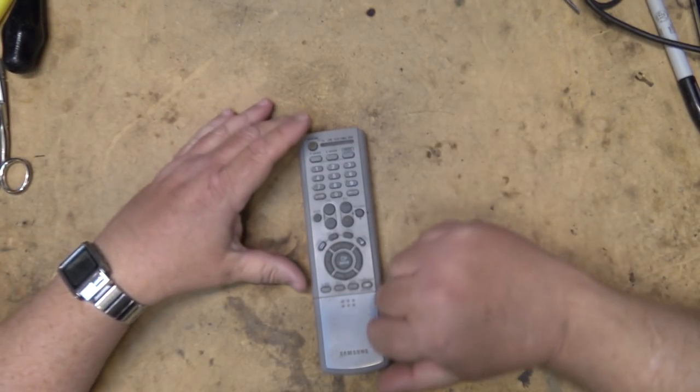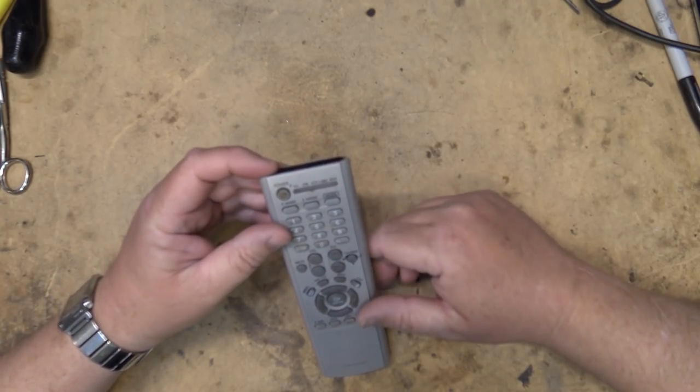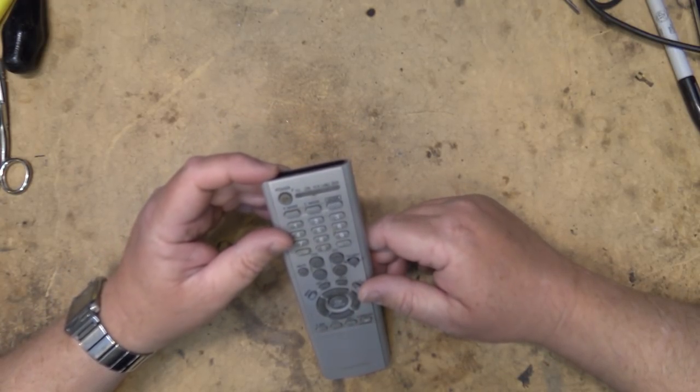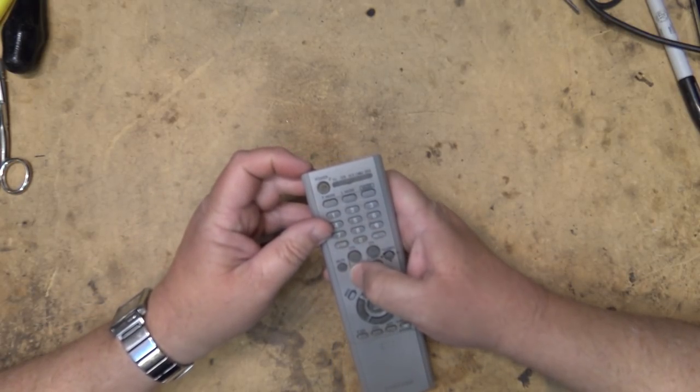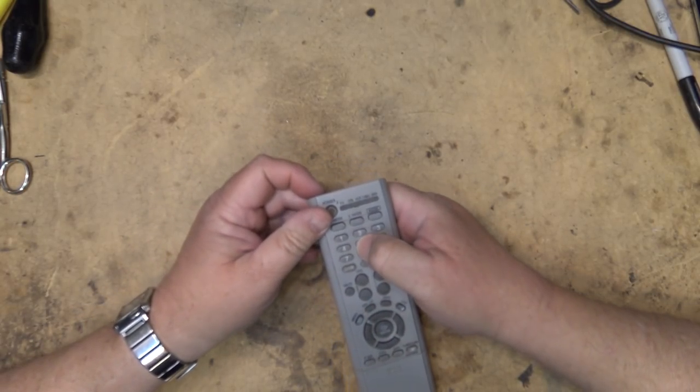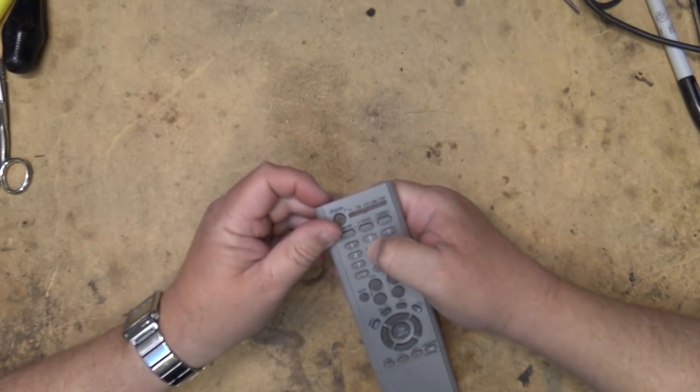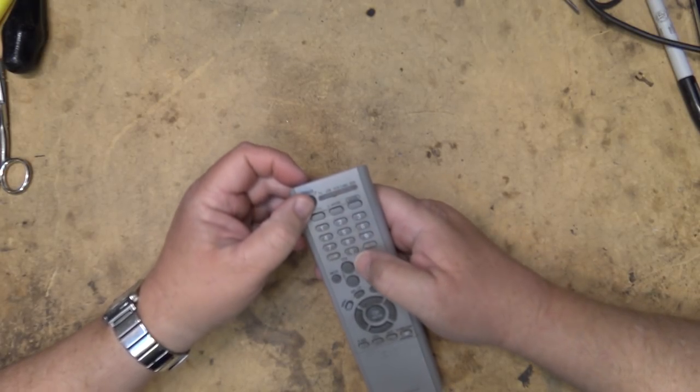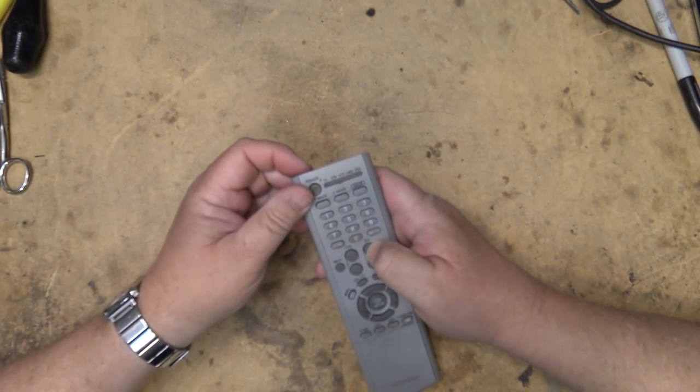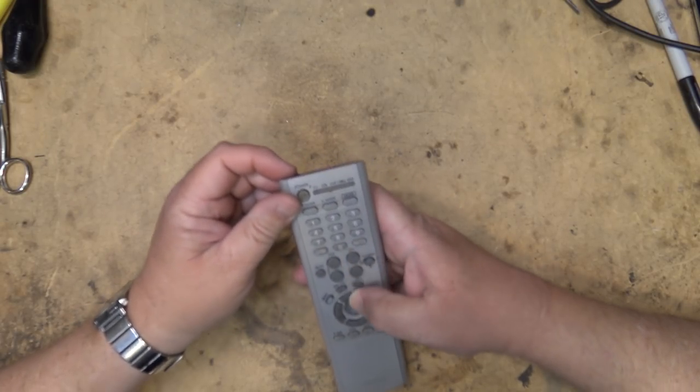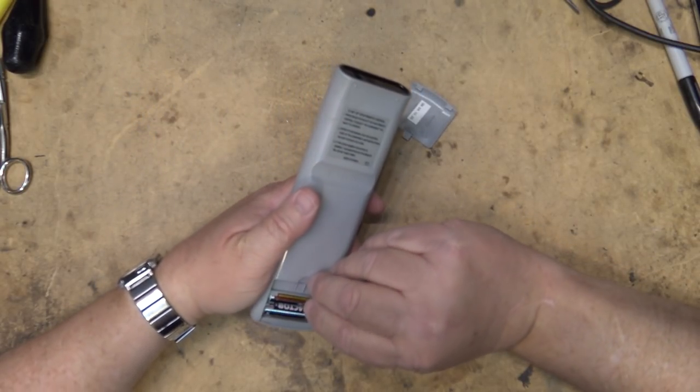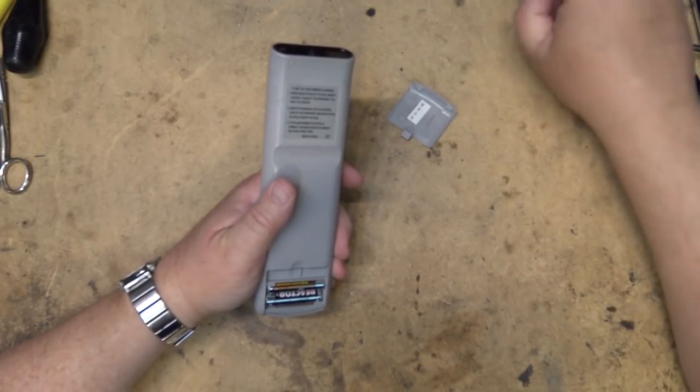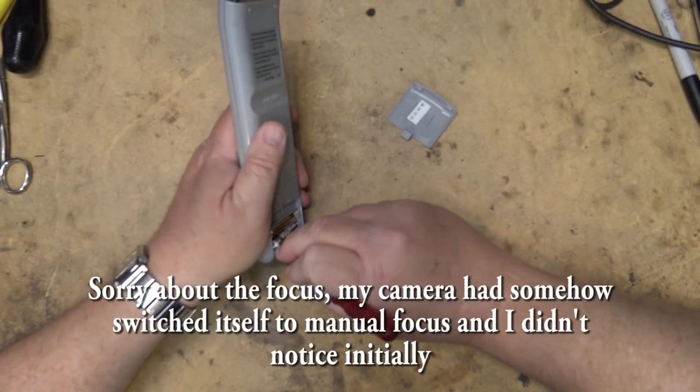I'm going to get rid of that set, and the remote has some of the buttons that don't work. The volume doesn't work and the power button doesn't work. All the rest of the buttons do, but these ones here have worn down. So we're going to open this remote up and see if we can fix the buttons that are not working.